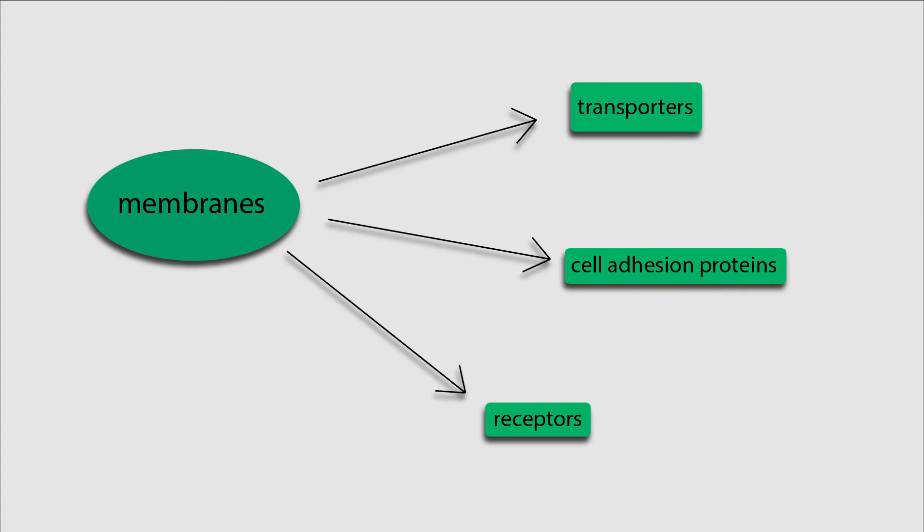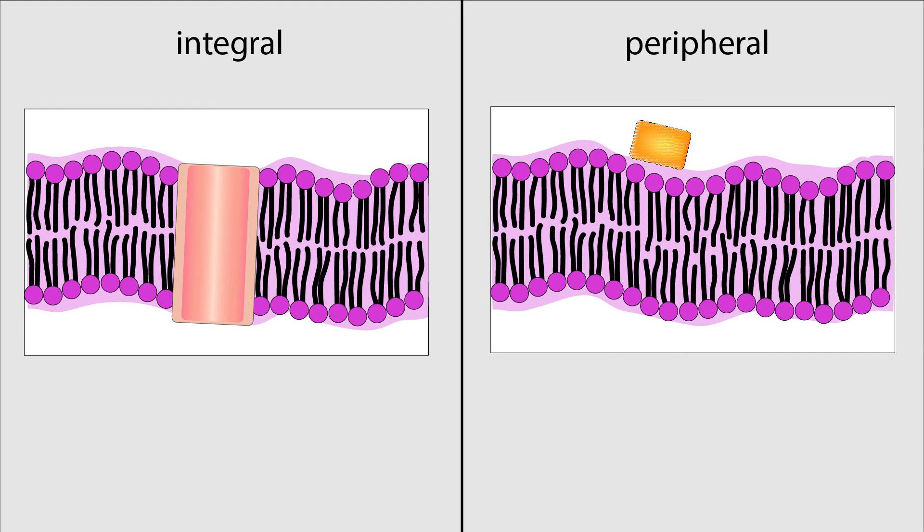We will see these proteins in action throughout the series, but today we will focus on their categorization and structure. Membrane proteins can be categorized into two main types, integral and peripheral.